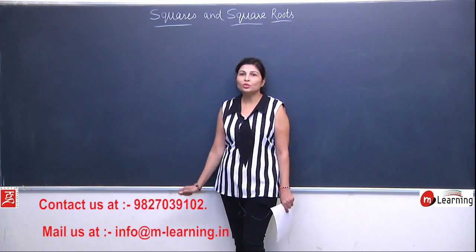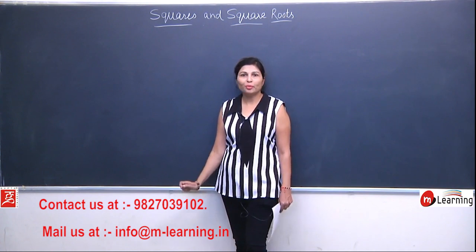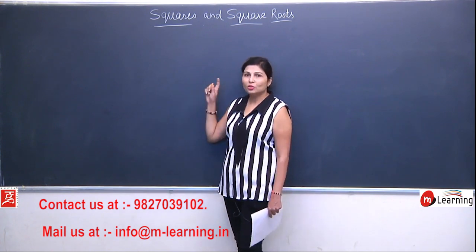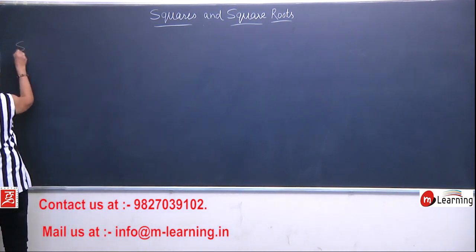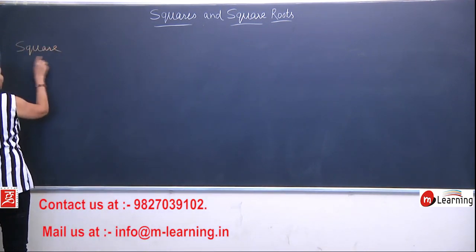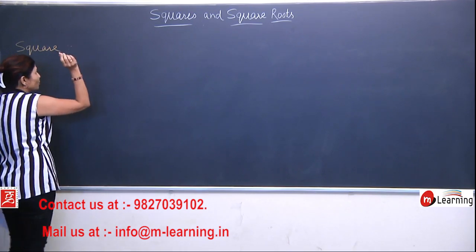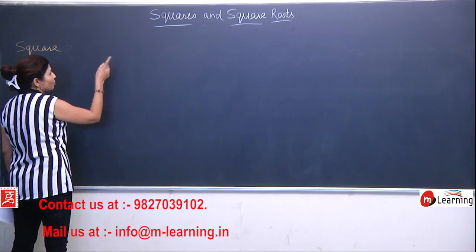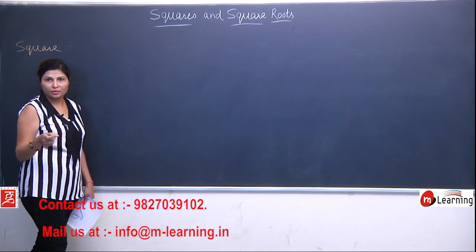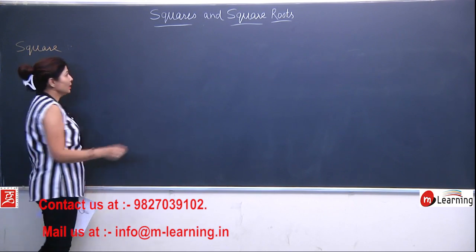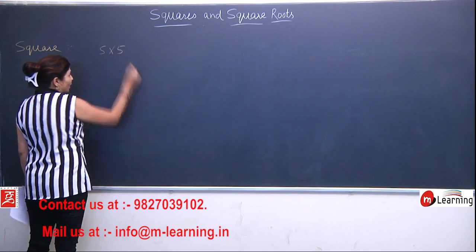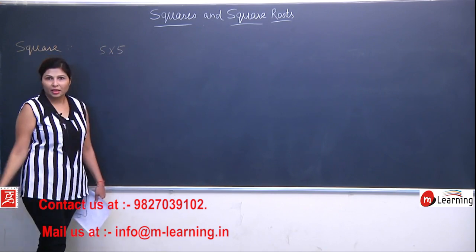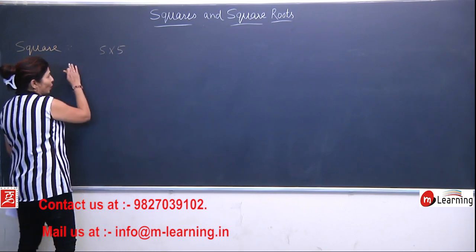Taking all the important and useful properties of power and exponent, let us start the topic: square. What is the meaning of square? Square means a number multiplied by itself. Take any number — let's say 5. 5 into 5, if we do that, then it is a square.